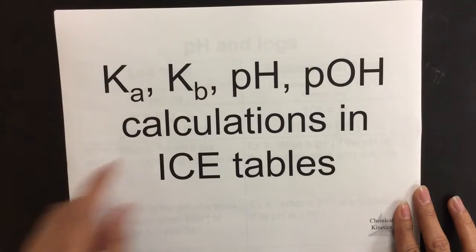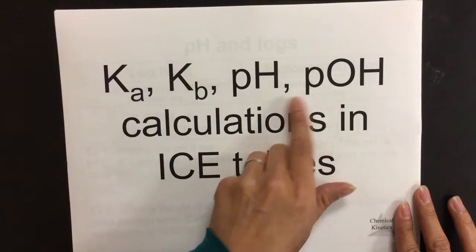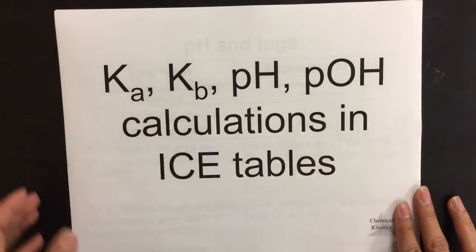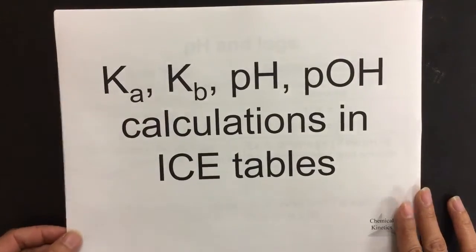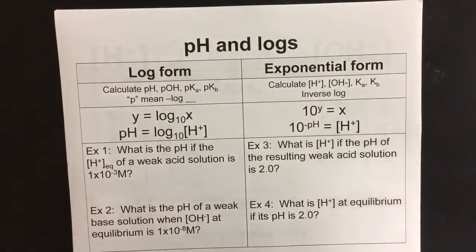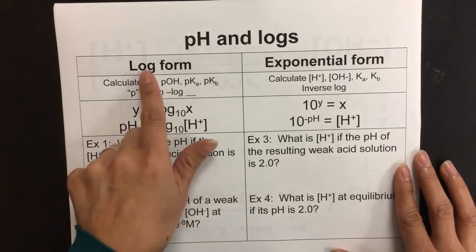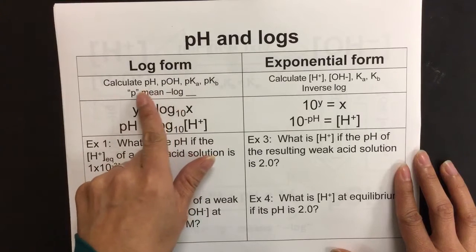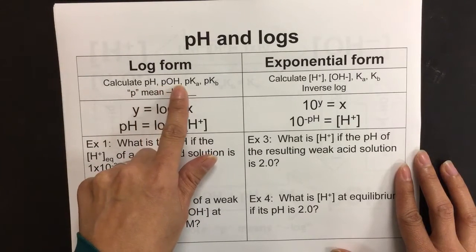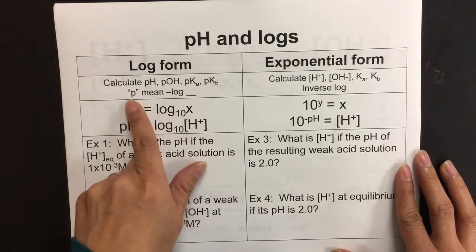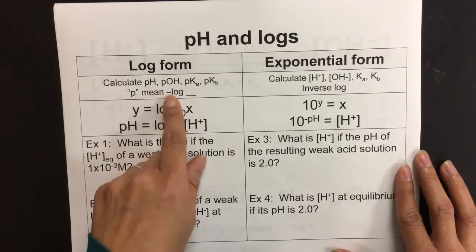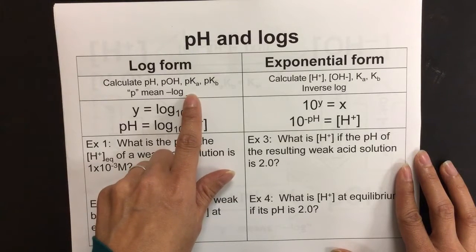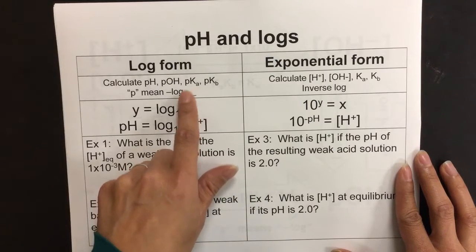Let's understand what p is. P is defined as negative log of the H+ concentration or the OH- concentration. So the definition for p of anything is negative log. When we calculate these problems, we're looking at calculating pH or pOH, pKa or pKb. What p means is negative log of whatever it is you're trying to find, which could be H+ concentration, OH- concentration, Ka constant or Kb constant.